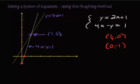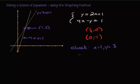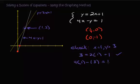We just have to verify by plugging (1, 3) into both equations. For the first line: 3 equals 2(1) plus 1 — that checks because 2 plus 1 is 3. For the second: 4 times 1 minus 3 equals 1 — that's 4 minus 3, which is 1. It checks out. There is the solution to a system of equations using the graphing method.